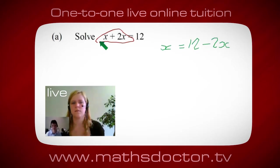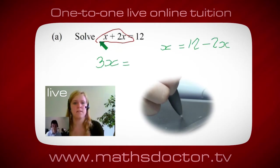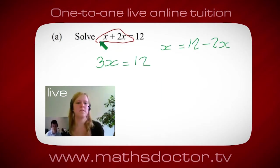Okay, it's 3x, isn't it? Yeah, absolutely. 3x equals 12, and so x equals 4. Brilliant, spot on, well done.